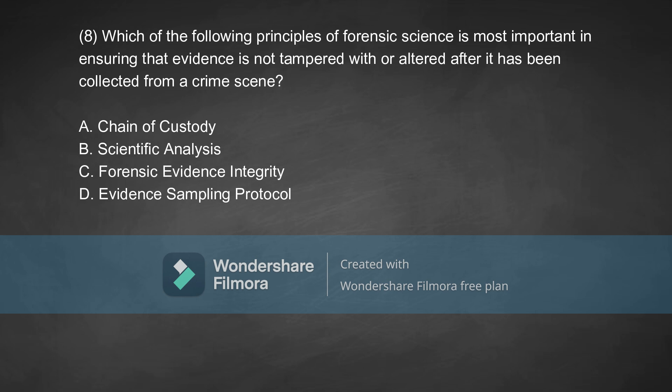Coming to the next question: which of the following principles of forensic science is most important in ensuring that evidence is not tampered with or altered after it has been collected from a crime scene? Option A, chain of custody. Option B, scientific analysis. Option C, forensic evidence integrity.